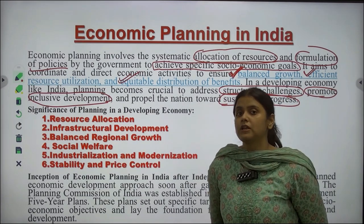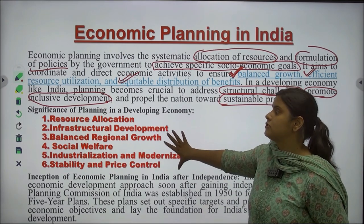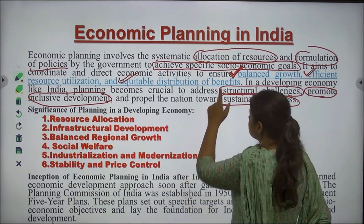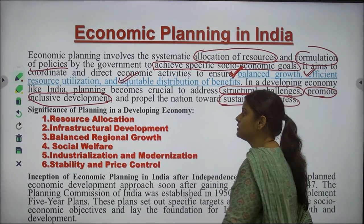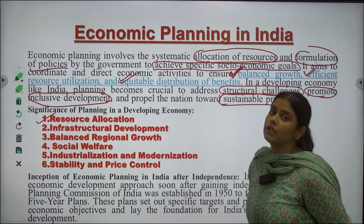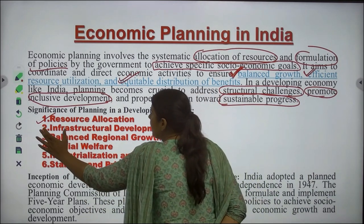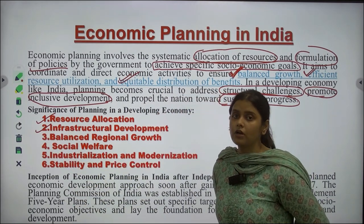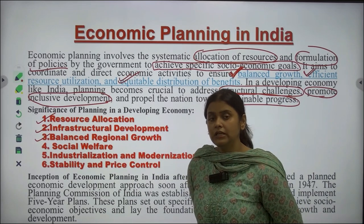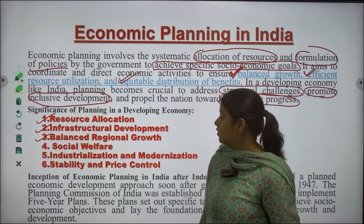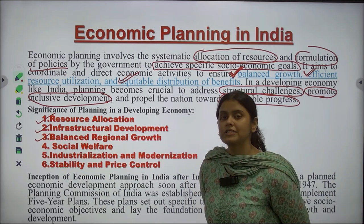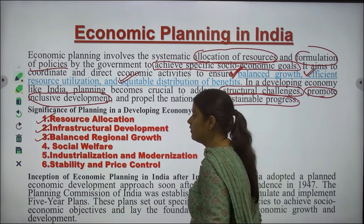What is the significance of planning? First is resource allocation — using resources in the best proper way because resources are depleting. Next is infrastructure development; without it, one cannot adhere to economic growth. Then balanced regional growth, meaning growth across all states and regions is necessary. Next is social welfare — basic amenities for every citizen should be provided such as sanitation, basic needs, education, and healthcare, to uplift the standard of living of citizens.